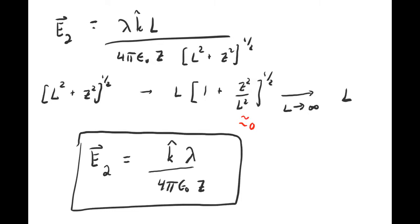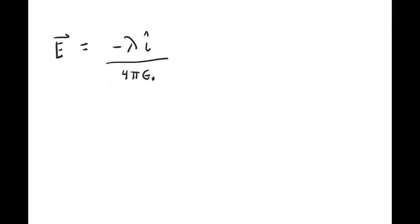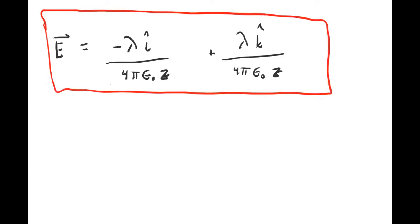Putting both results together, the electric field is: minus i-hat lambda divided by 4 pi epsilon-naught z, plus lambda k-hat divided by 4 pi epsilon-naught z. That is my final result. The units check out: lambda goes like charge over length, I have another length downstairs, so this goes like 1 over length squared — correct units for an electric field.